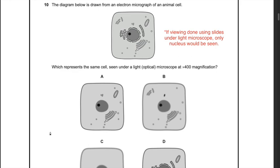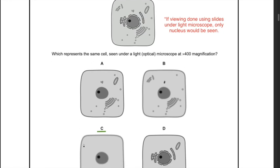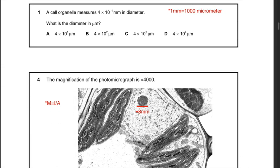Next question: the diagram below is drawn from an electron micrograph of an animal cell. Which represents the same cell seen under a light microscope at 400× magnification? Under a light microscope, only the nucleus would be seen — only in the electron microscope can you view the mitochondrion and the endoplasmic reticulum. Since they are talking about a light microscope at 400× magnification, the answer is C.